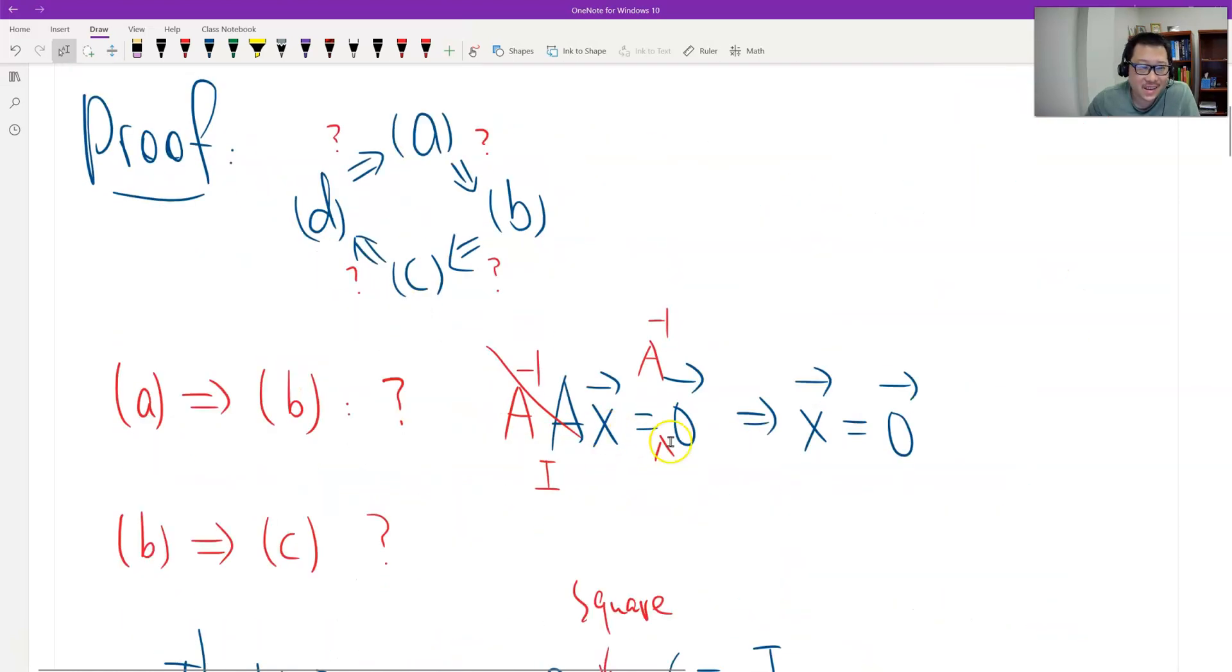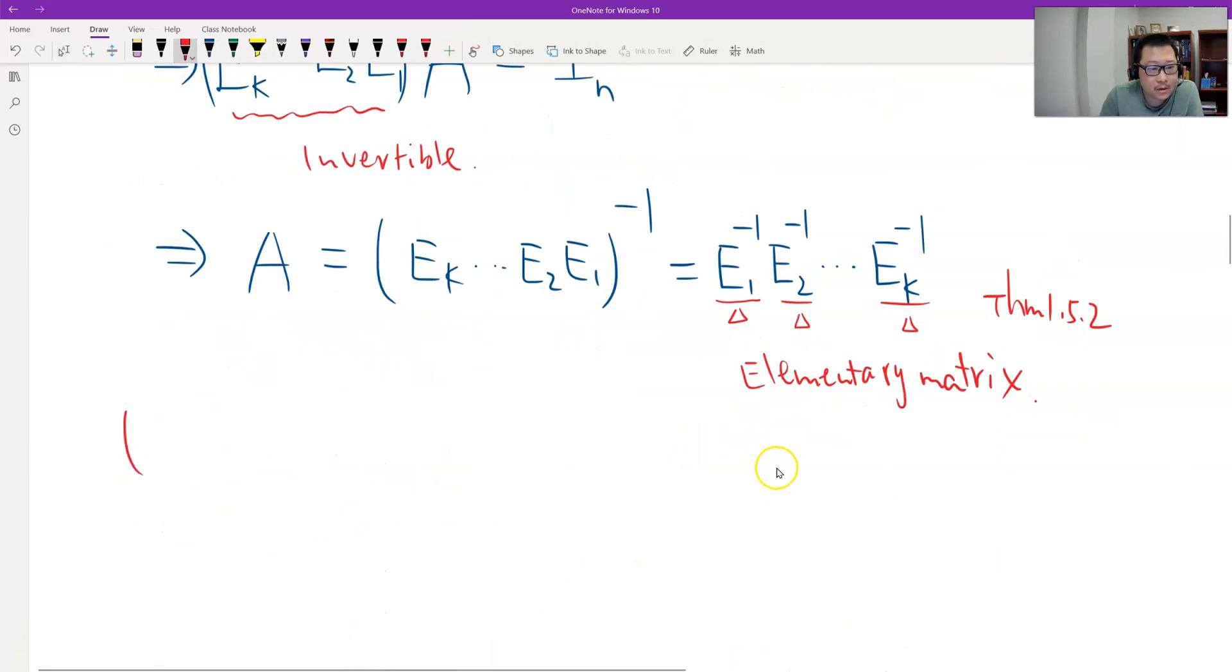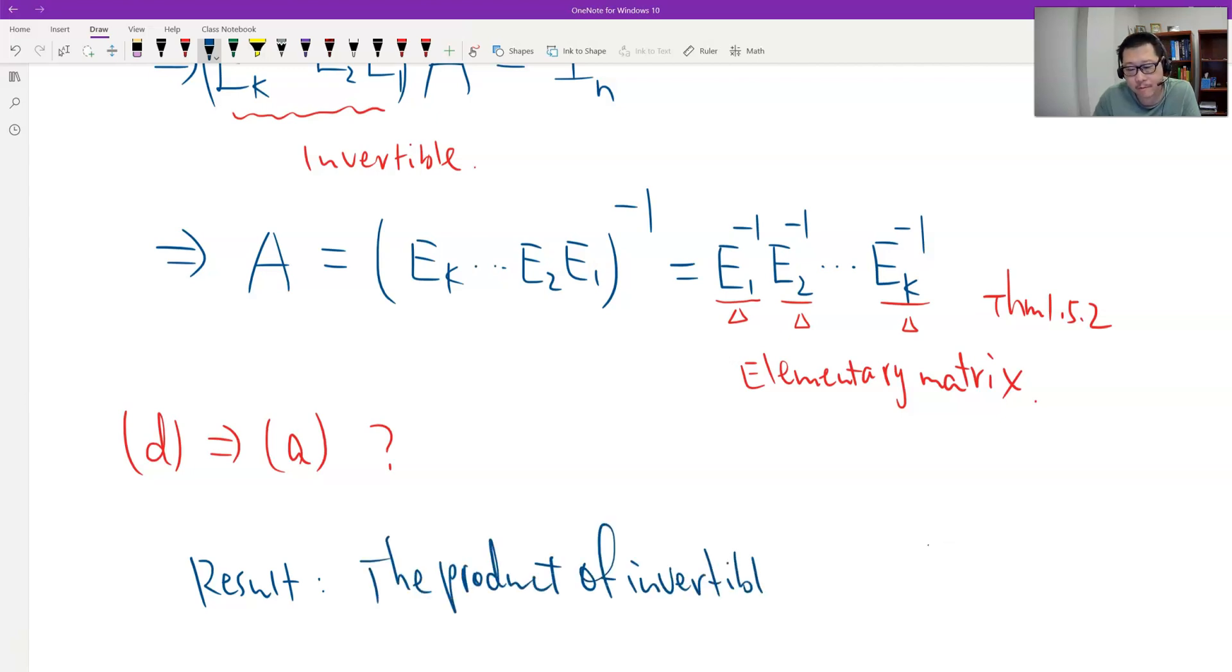It's D to A. D to A is quite easy. Why? D means A already breaks down into elementary matrices. And A means the matrix A is invertible. Each elementary is invertible. So the product of invertible matrices is invertible. That's easy. We only need this result. We have this result before. The product of invertibles is invertible. So therefore, all proved.